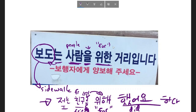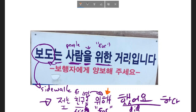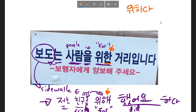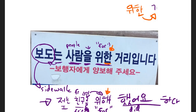So if you put 를, the object particle, on some sort of person and then follow it by 위해, you're saying that something is for this person. Now, this is actually not the exact same form as in the sign. In my example sentence I have 위해, and in the sign I have 위한, but really they're the same word. Because I've attached this letter to 위하다 — which is the actual dictionary form — it's now 위한. As you might be aware, you can do this to a lot of words; this allows you to describe an upcoming noun. The upcoming noun is 거리, which means street or road.